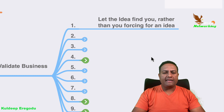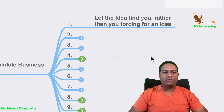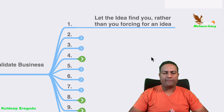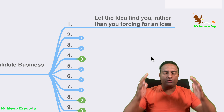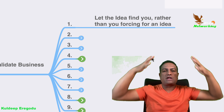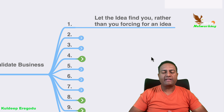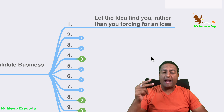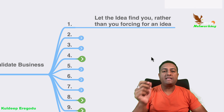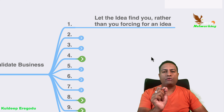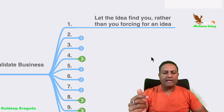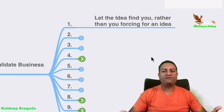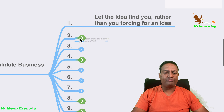Step one: let the idea find you rather than you forcing for an idea. You need not force it — don't sit and think 'what business must I start?' Let the idea flow to your mind. Whenever an idea comes, make notes, put it in WhatsApp, or share it with a friend who can further validate it for you. Let the idea find you — free flow idea.